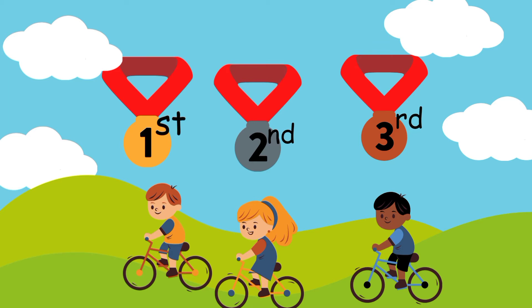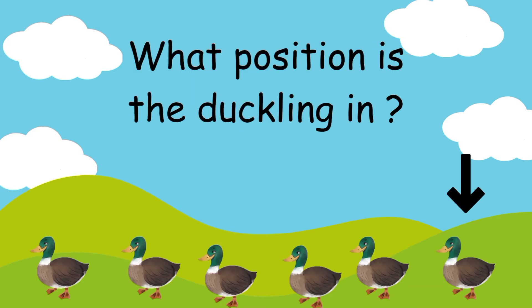Remember, ordinal numbers are used to indicate the order of things, like the placement of runners in a race, the order of months in a year, or the position of objects in a line.